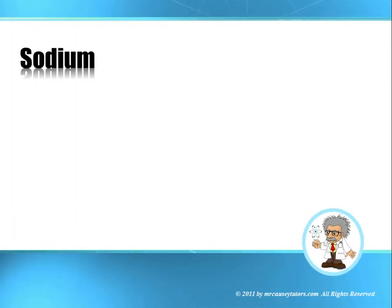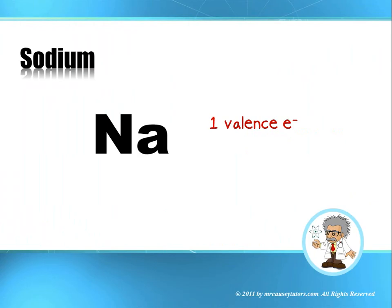Let's look at another one. Sodium. How many valence electrons? Look on your periodic table. It's number 11. And there's one valence electron. Just one. There we go. Check.